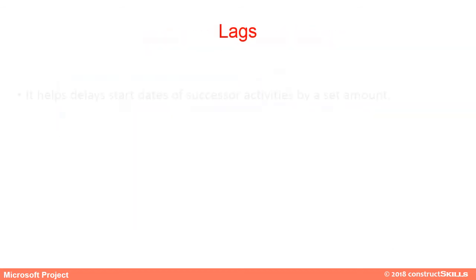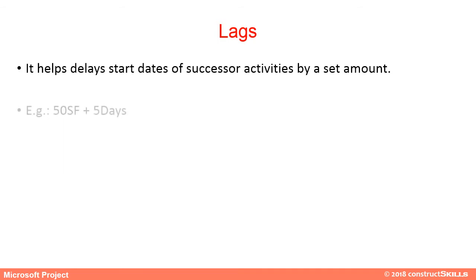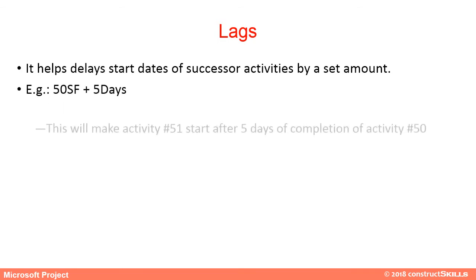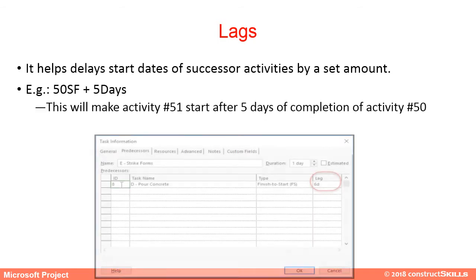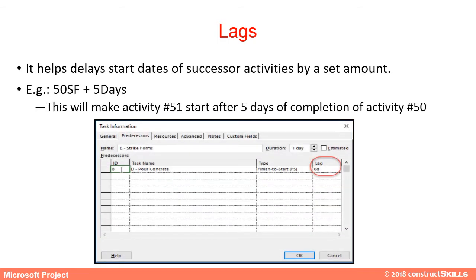Lags help separate the start dates of successor activities by a set amount. For example, the lag in a relationship will make Activity 51 start after 5 days of completion of Activity 50.